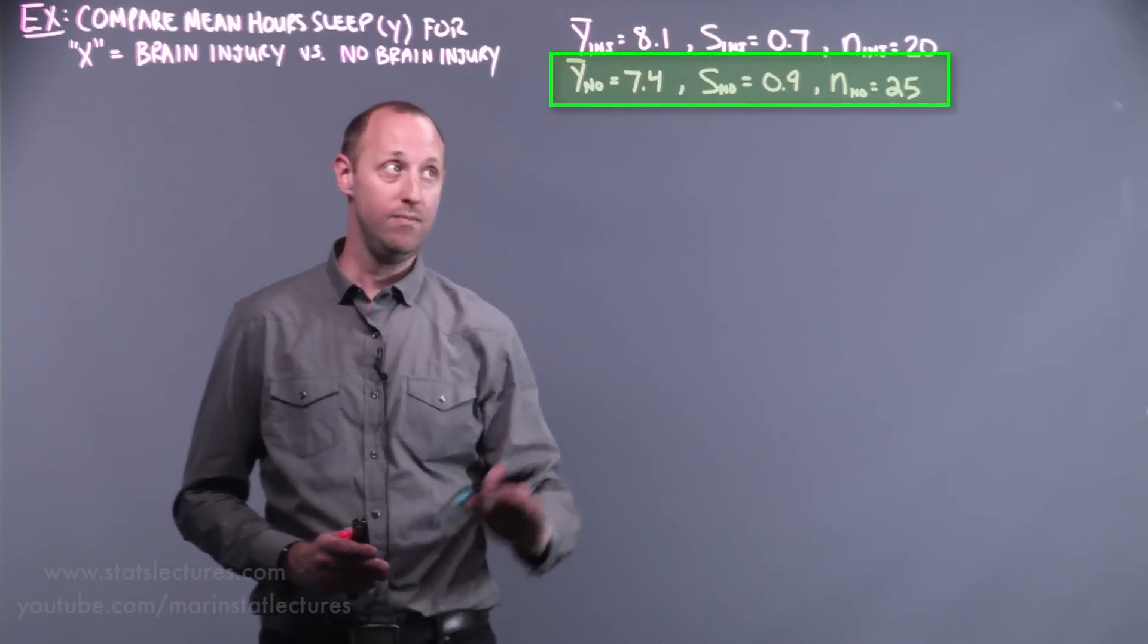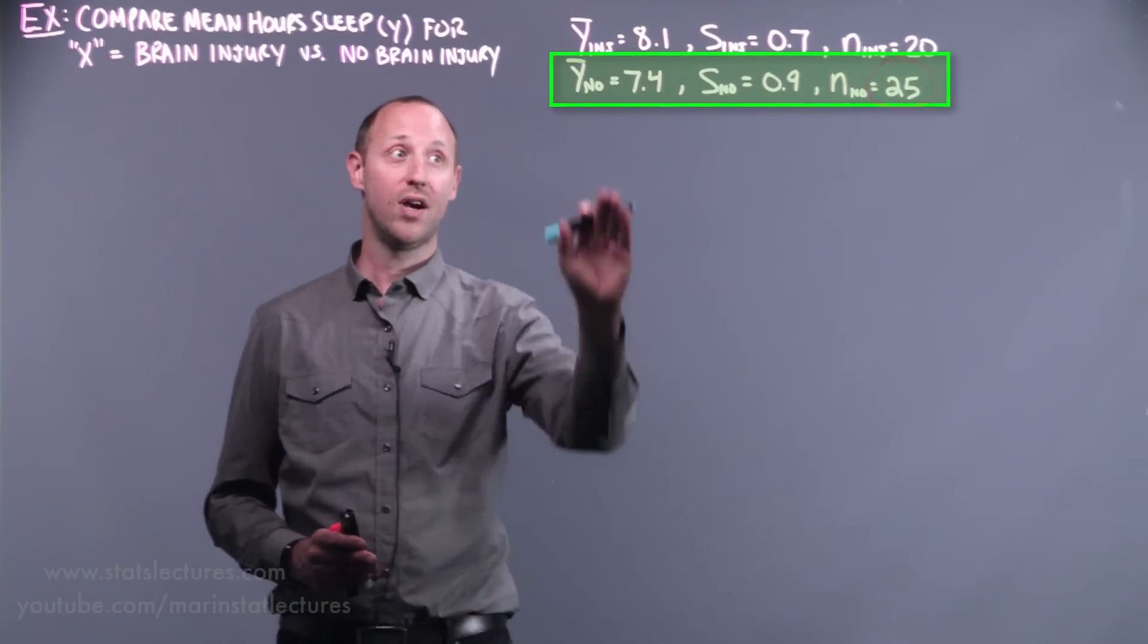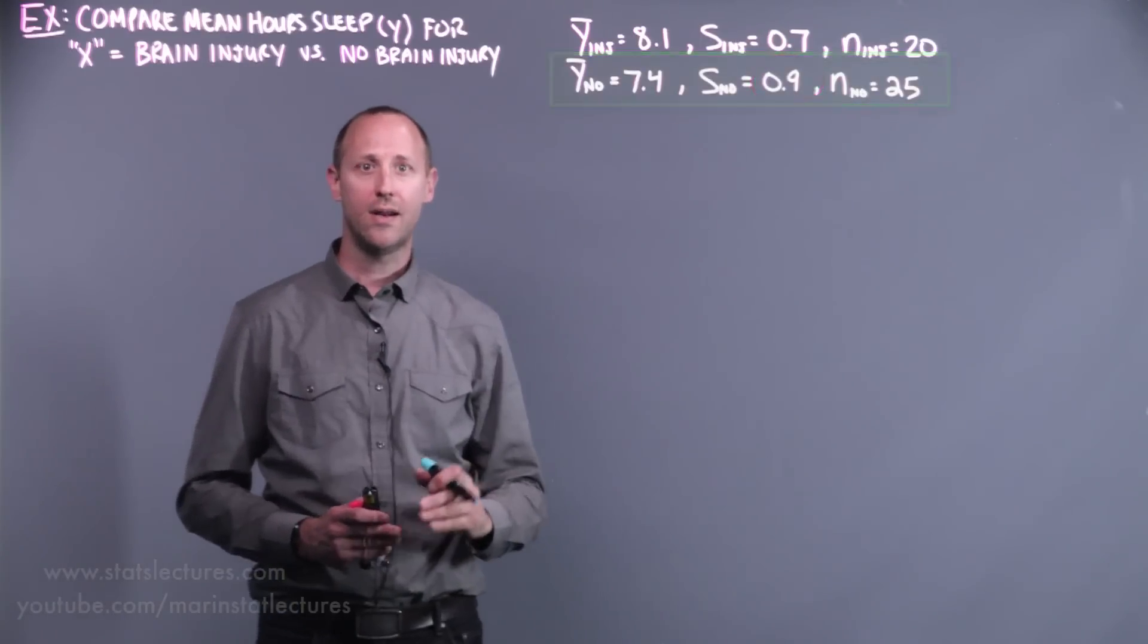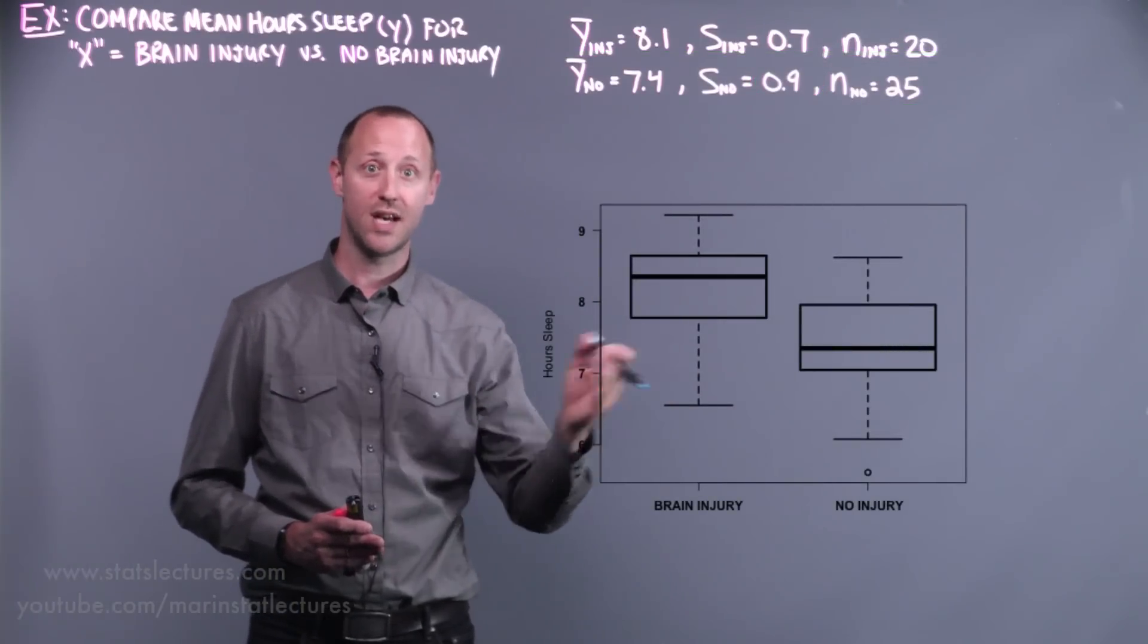In the no brain injury group, we've got 25 people, a mean of 7.4 and a standard deviation of 0.09. We can compare these two groups using side-by-side box plots.